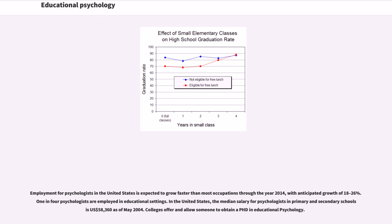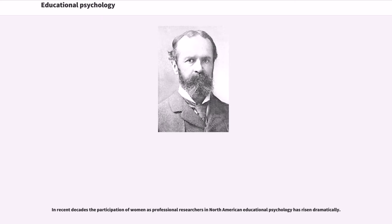Employment for psychologists in the U.S. is expected to grow faster than most occupations, with anticipated growth of 18–26%, and one in four psychologists are employed in educational settings. The median salary for psychologists in primary and secondary schools is US$58,360 as of May 2004. In recent decades, the participation of women as professional researchers in North American educational psychology has risen dramatically.